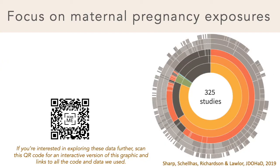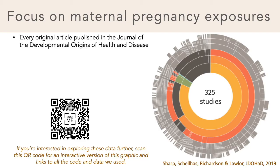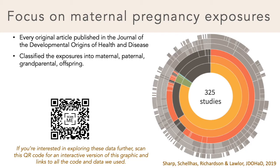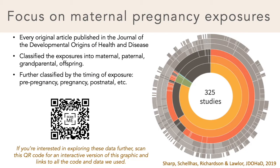In another study published at the start of 2019, we showed that in the main journal for this field, 81% of studies considered maternal exposures only — that's the yellow inner circle — and 3% studied maternal and paternal exposures in the same paper — the green inner segment. And only one study, so 0.3%, studied paternal exposures without maternal exposures — that's the tiny blue strip in the inner circle.